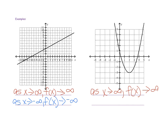Now let's see what is happening to the f of x values as the x values are going in a negative direction. Our x values are going in a negative direction, but our y values are now going in a positive direction. Going back to the linear graph, as x values were decreasing, f of x values were also decreasing. But in this quadratic graph, as x values are decreasing towards negative infinity, our f of x values are actually going towards positive infinity. So the statement is: as x approaches negative infinity, f of x approaches positive infinity.